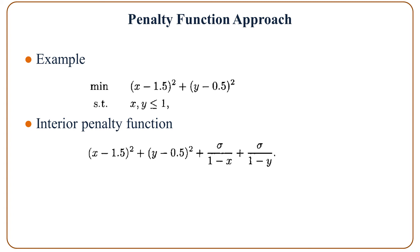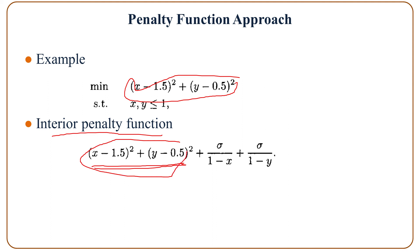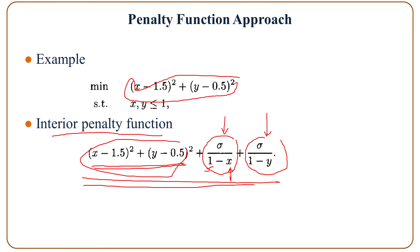An example is this: minimize (x minus 1.5) squared plus (y minus 0.5) squared, subject to x and y less than or equal to 1. The interior penalty function is formed with the first objective function and then the barrier functions for the first and second constraints. As x approaches 1, the cost for that term increases. Similarly the same thing happens for y. And when x equals 1 or y becomes 1, the cost function becomes infinity.